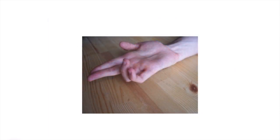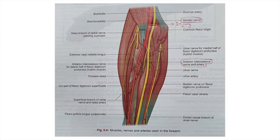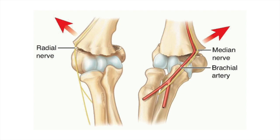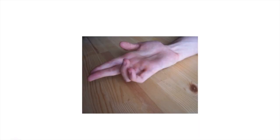This is the deformity in median nerve injury above the elbow, also called supracondylar injury of the median nerve, which commonly occurs with supracondylar fracture of the humerus. This is called the hand of benediction.